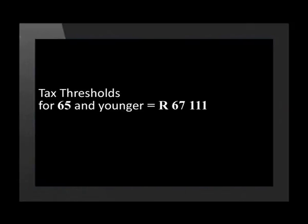Michael has had tax deducted from his salary. This money is paid to the government to help pay for services provided to the country. Everyone pays a different amount of tax and the amount they pay is based on the amount of money they earn. If someone earns below a certain amount called the tax threshold, they don't have to pay any tax. For the 2013-2014 tax year, the tax threshold for taxpayers 65 years and younger was 67,111 rand.